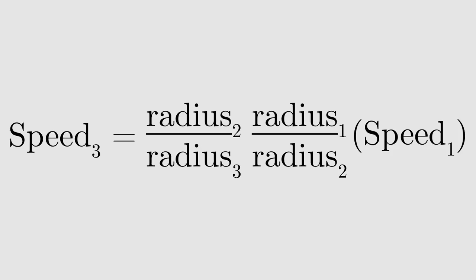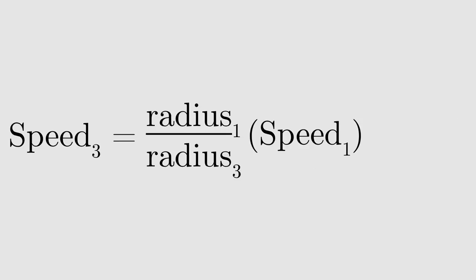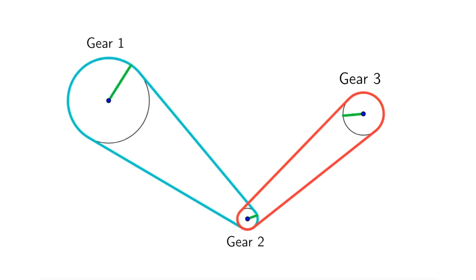Combining these together, we can cancel out radius 2, giving a direct relationship between gears 1 and 3. Here's the key observation. This is the relationship we would expect if gear 2 was gone and gears 1 and 3 were directly connected.